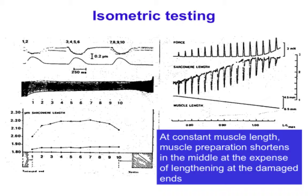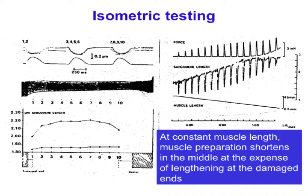The sarcomere length decreases from about 2.2 microns down to less than 1.9 microns because the damaged, compliant ends are stretched a lot. The right-hand panel shows how force changes as you stretch the muscle. As you gradually increase muscle length from 4.5 to 6.5 millimeters while stimulating at regular intervals, consecutive twitches get bigger and bigger—just as in skeletal muscle, there is an ascending limb to the length-tension curve where more force is developed as you stretch.